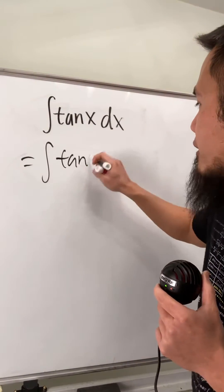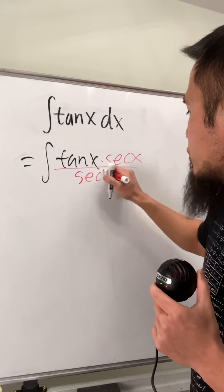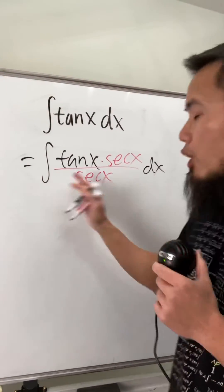I will actually just keep tangent x right here, but I will multiply the top and bottom by secant x. You will see this right here is actually going to be really beneficial for the following question.